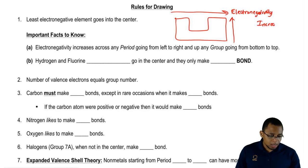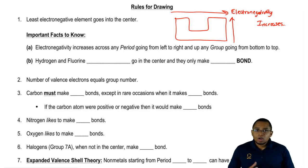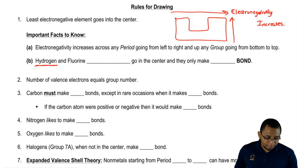Remember, with chemistry, there's one thing you can always depend on. There's always an exception to something you come up with. We say that the least electronegative element goes in the center, but that's not always the case. When it comes to hydrogen and fluorine, they never go in the center. Never, ever go in the center and they only make one bond.